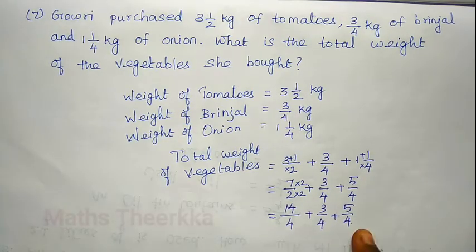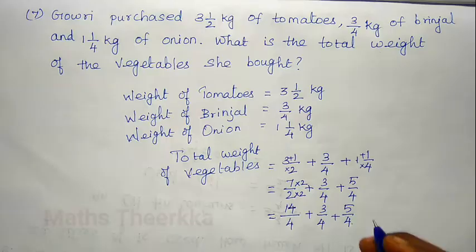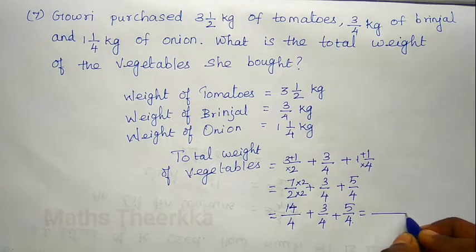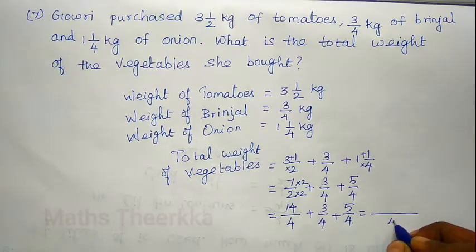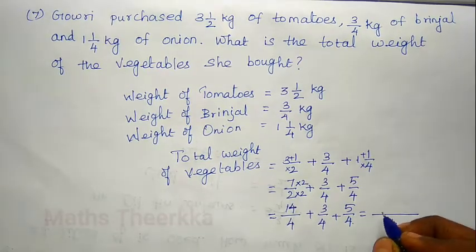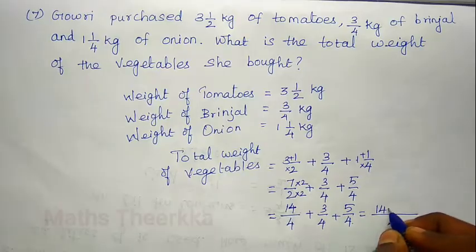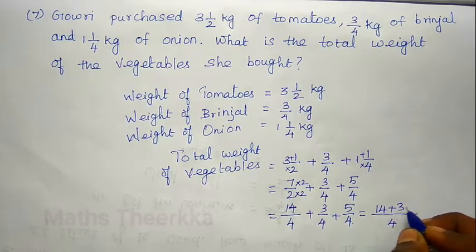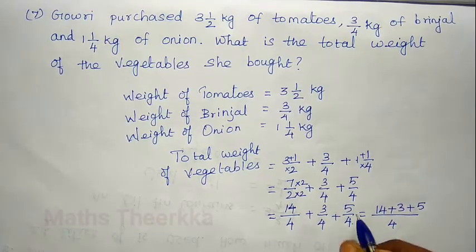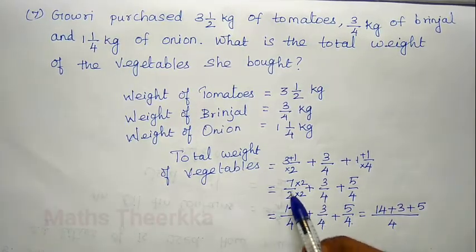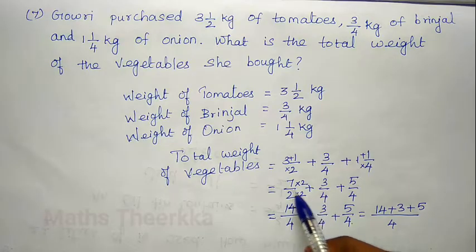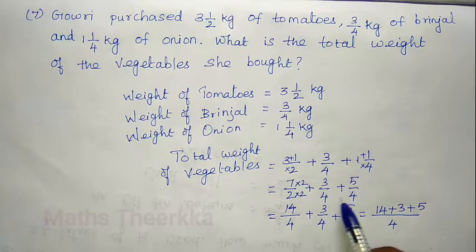Since the denominator is like fractions — all equal to 4 — we keep the common denominator 4 and add the numerators. So 14 plus 3 plus 5, with denominator 4.